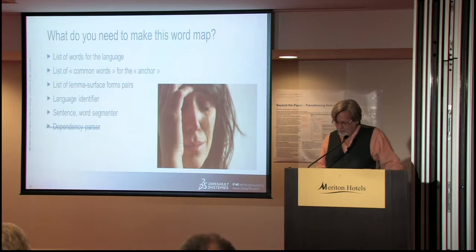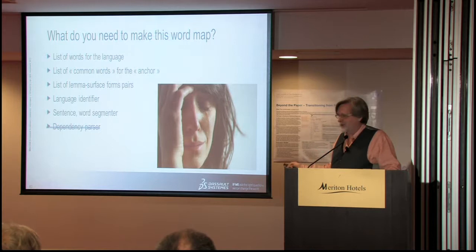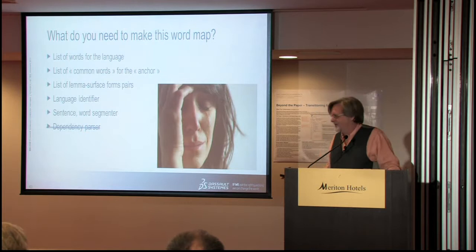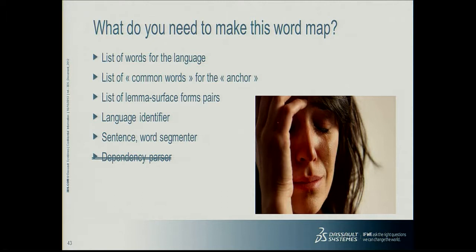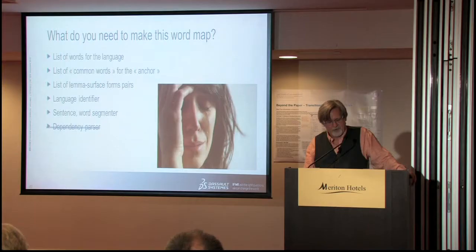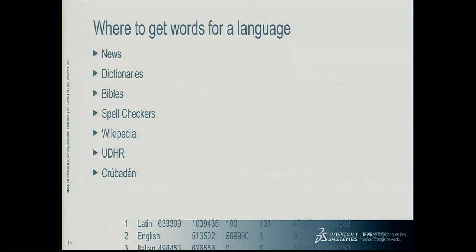So if you want to do a word map or word sketch for all the languages in the world, we're not going to have a dependency parser for most of them. Let's start from the simpler end: forget about dependency parsers and lemma forms. Do we at least have a list of the words in the language? Can we find a list of the words on the internet? Here are some places where you can get words for a language: from newspapers, dictionaries, Bibles, spell checkers, Wikipedia, the Universal Declaration of Human Rights, and Crubadan, which I'll talk about later.